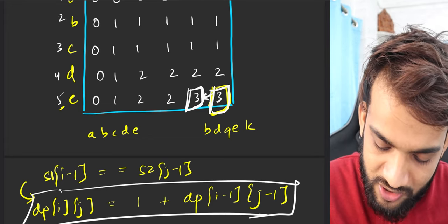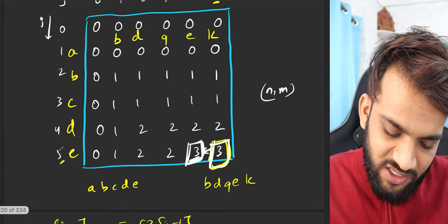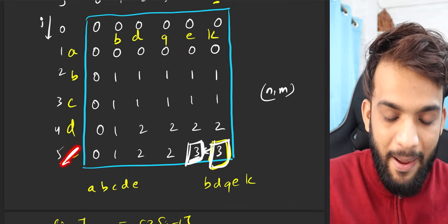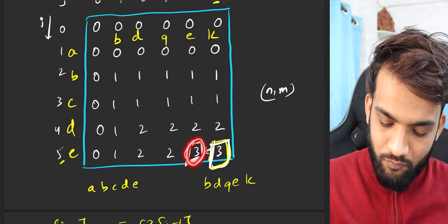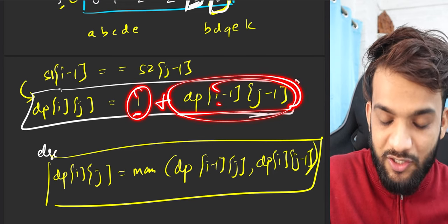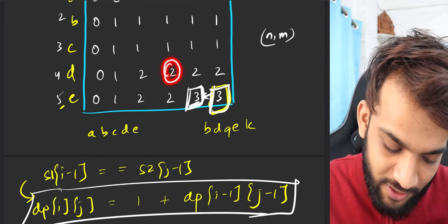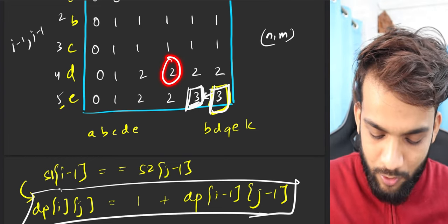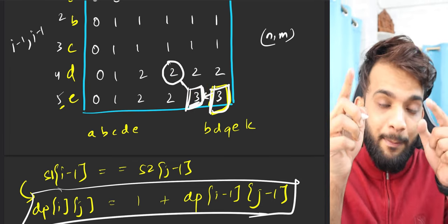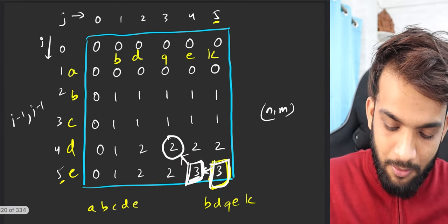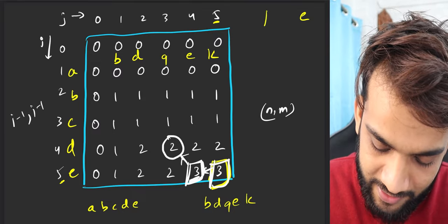Start from the last cell dp[n][m] and begin moving the pointer. Now you're at dp[4][4]: this is 'e' from s1 and 'e' from s2 — they match! When they match, this 3 came from 1 + dp[3][3] (the diagonal). Before moving to the diagonal, since 'e' matches, store 'e' as an answer. Create a string of length 3 and store 'e' at the last index.